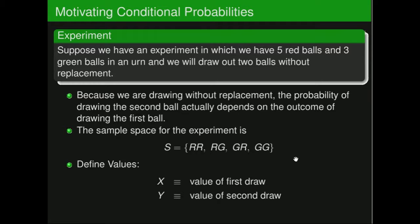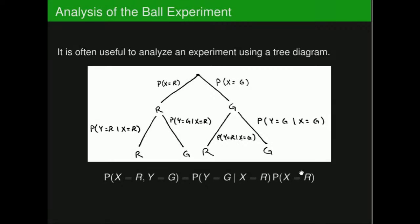Let x be the value on the first draw and y be the value on the second draw. The sample space has four outcomes: red-red, red-green, green-red, and green-green. The best way to analyze this experiment is a tree diagram. A tree diagram has a root node at the top, and the tree grows downward — each level corresponding to a draw in the experiment.